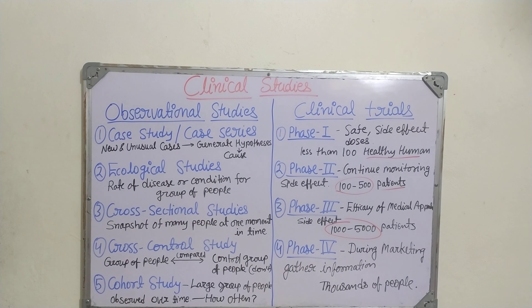Phase 4 is post-marketing surveillance. During marketing, when the drug has come into a particular dosage form and physicians have started prescribing it, thousands of people are using it. During this period, adverse events are observed and information is gathered about the drug — its side effects, its efficacy, and so on. These two basic types — observational studies and clinical trials — constitute the clinical studies.